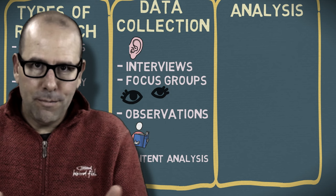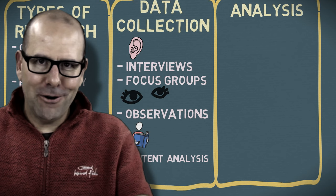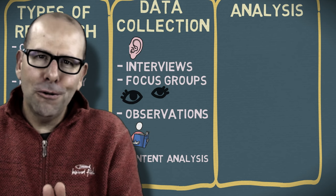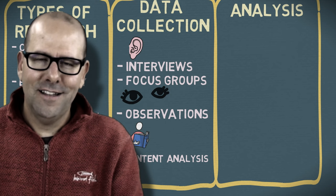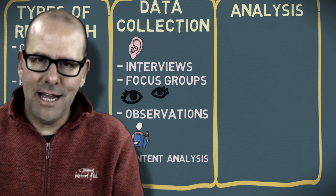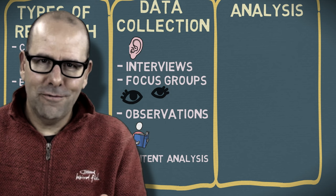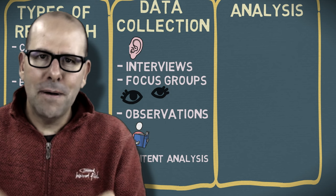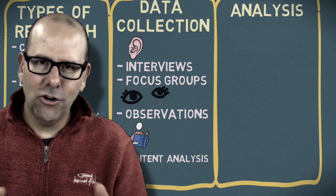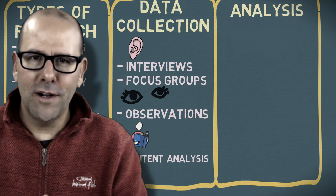Focus groups are much like interviews, but with more than one person in the room. The nice thing about focus groups is that people can interact with each other, so you get a really rich source of ideas — ideas can develop, unfold, change, and merge. The whole thing is moderated by the researcher and can be structured, semi-structured, or unstructured. Observational data is where we observe people directly, and the researcher takes field notes or uses another method of recording. The researcher may or may not be a participant in the activity, and subjects may or may not know they're being observed.